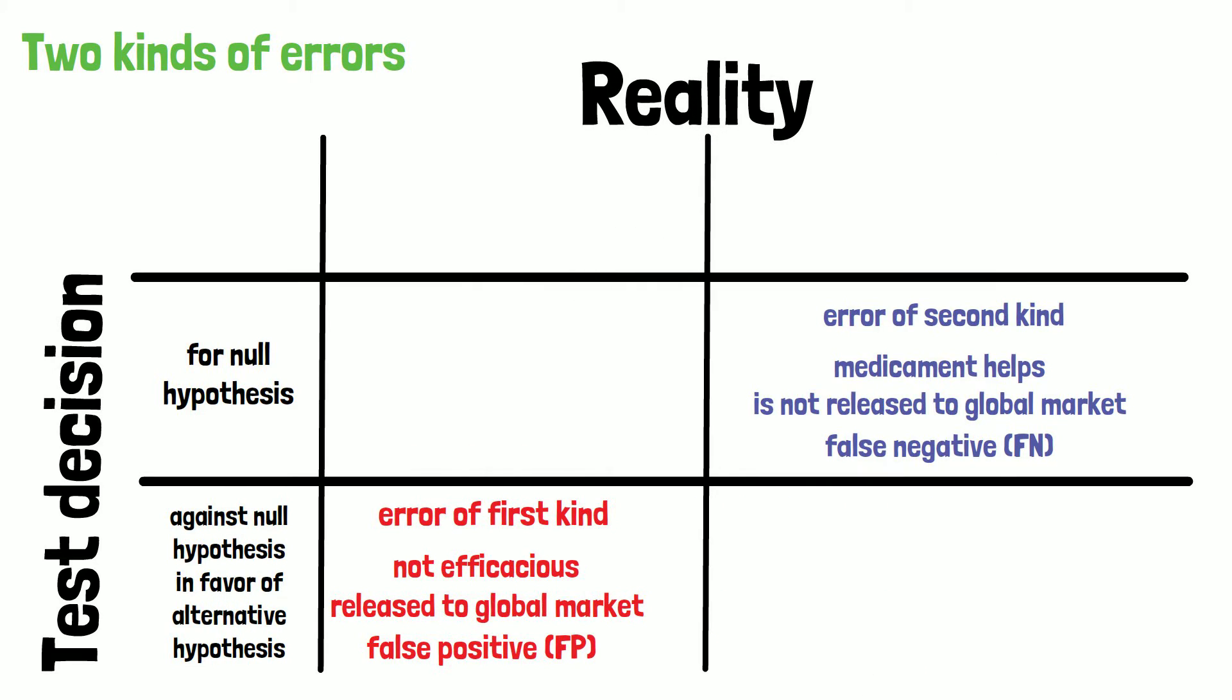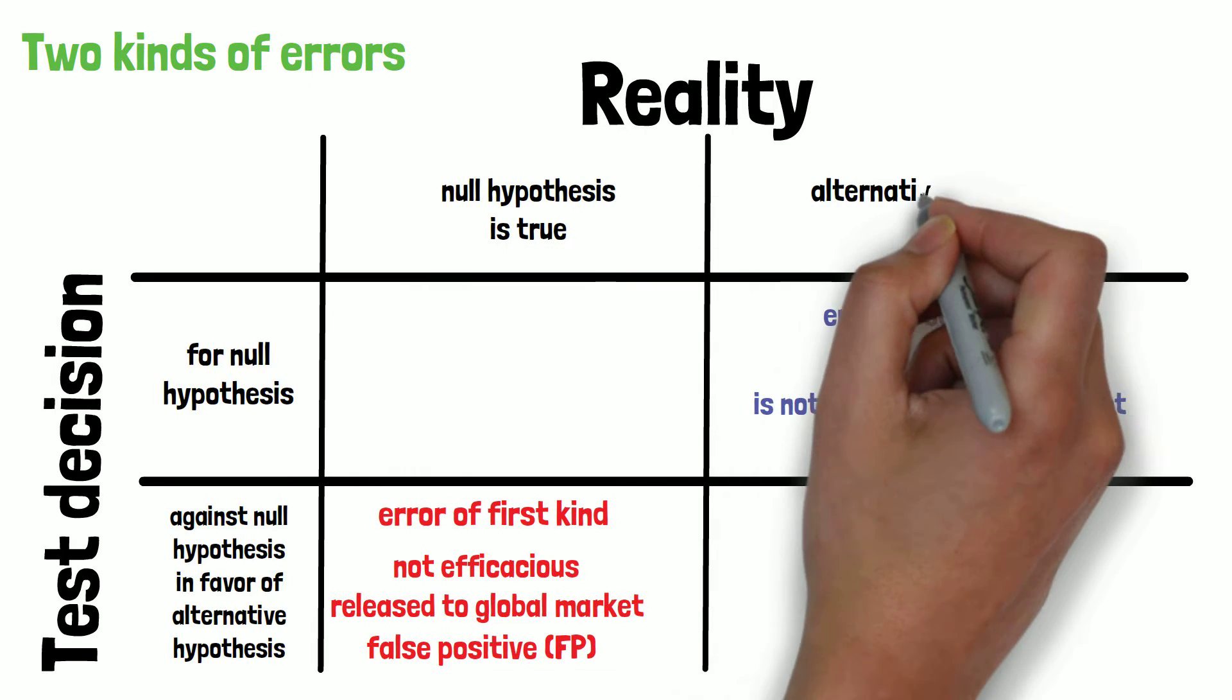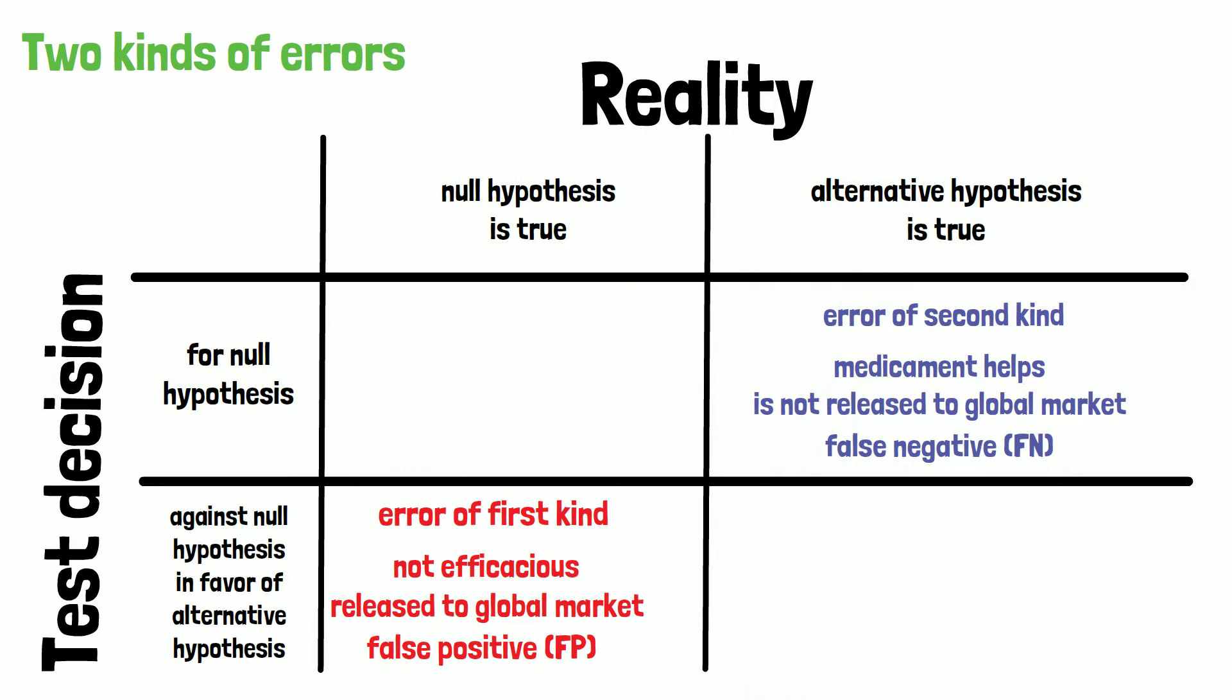Now the error of the first kind is given when the null hypothesis is true, but the test would reject it. The error of the second kind would be if the alternative hypothesis is true, but the test is deciding in favor of the null hypothesis.